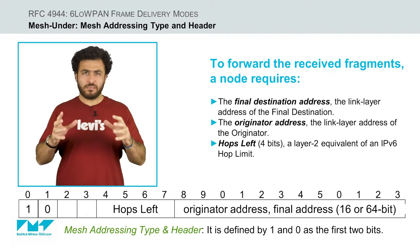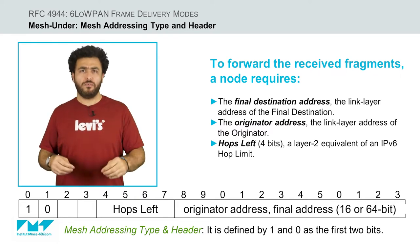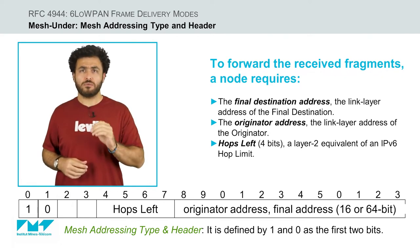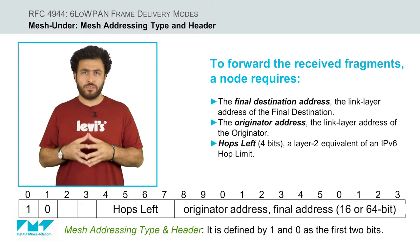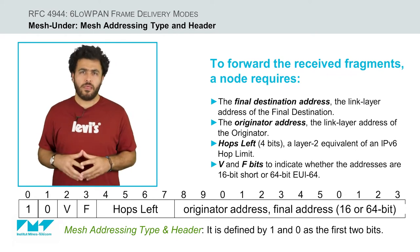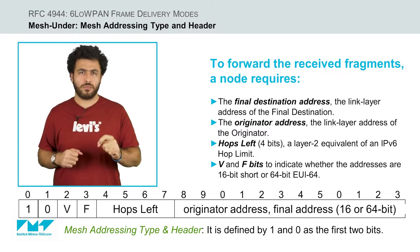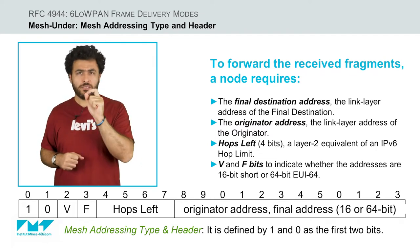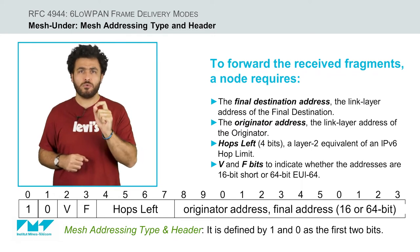In addition to the addresses, the mesh header stores a layer 2 equivalent of an IPv6 hop limit. This value must be decremented by a forwarding node before sending the frame to its next hop. If the value reaches 0, the frame is discarded silently. Finally, the mesh header defines the V and F bits that indicate whether the originator address and the final destination address respectively are 16-bit short or 64-bit EUI-64 addresses.